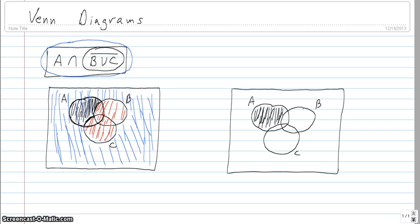An example of an equality that we might be able to verify using Venn diagrams is this one.